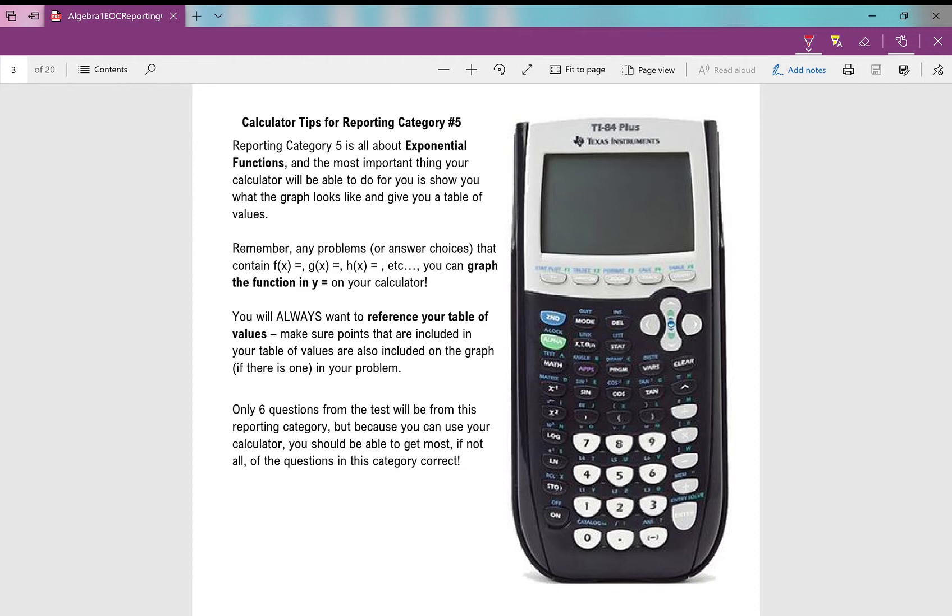But you do need to remember that if you ever see f of x equals, g of x equals, h of x equals, that's just fancy for y. You can always plug that into y equals on your calculator. Then you can graph it. What does the graph look like? Is it going to show exponential growth, which looks like that, or is it going to show exponential decay? Because that's what reporting category number five is all about—it's all about exponential functions.